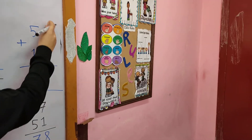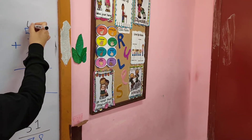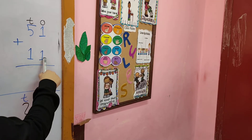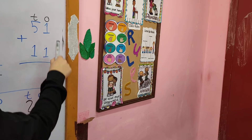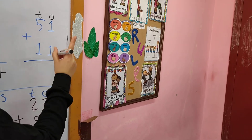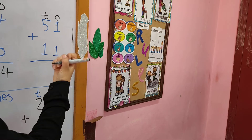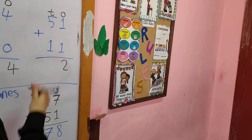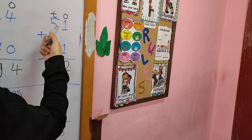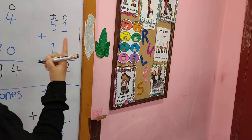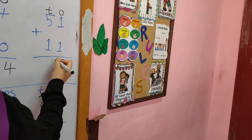51 plus 11. The first thing: write O and T. In the 1's column: 1 plus 1. I put 1 in my mind and another 1 on my fingers and count after 1. After 1: 2. In the 10's column: 5 plus 1. I put 5 in my mind and 1 on my fingers and count after 5. After 5: 6. So the answer is 62.